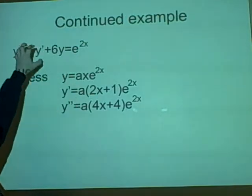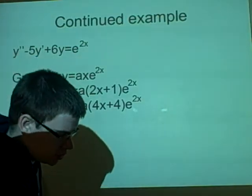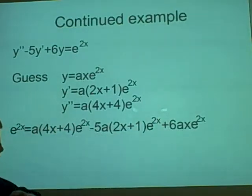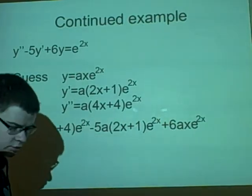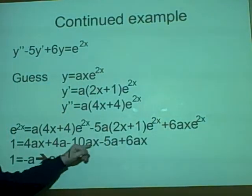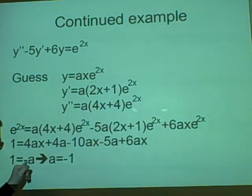We substitute these into here, and it's going to be quite a long one. And once again, we can cancel the e^(2x), and we'll see 1 over there. We can multiply it out.